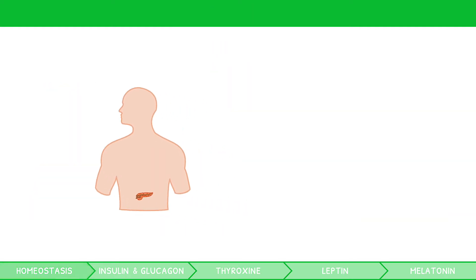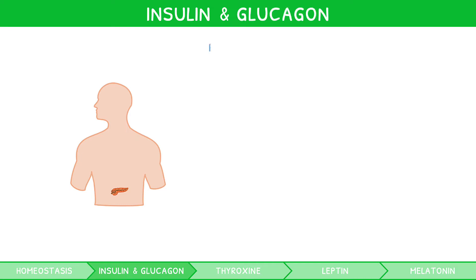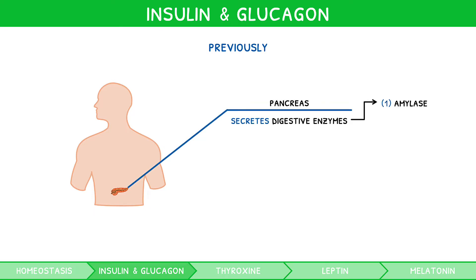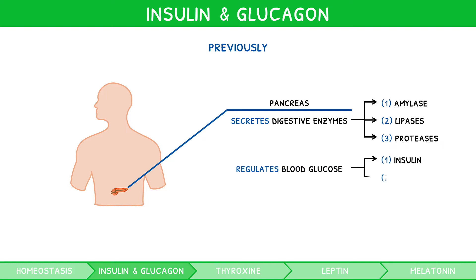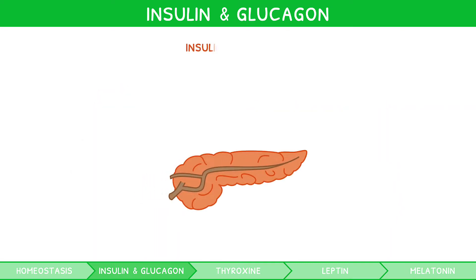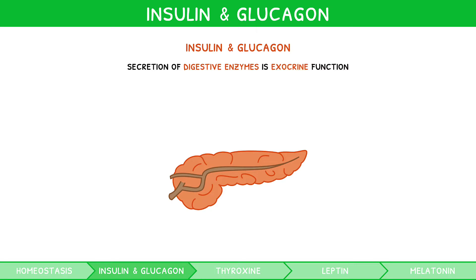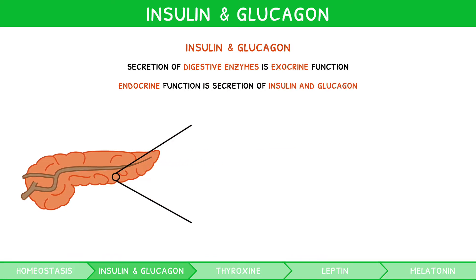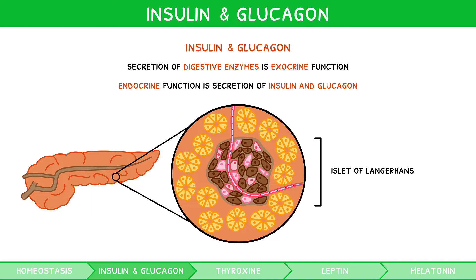Let's start by looking at the regulation of blood glucose. In the first video of our IB Biology Topic 6 series, we discussed the secretion of amylase, lipases and proteases by the pancreas. However, our body's blood glucose concentration is also regulated by the pancreas through two further hormones, insulin and glucagon. The secretion of digestive enzymes by the pancreas is termed its exocrine function, whilst the endocrine function relates to the secretion of insulin and glucagon from areas known as islets of Langerhans. Within these areas, there are two types of cells: alpha and beta.